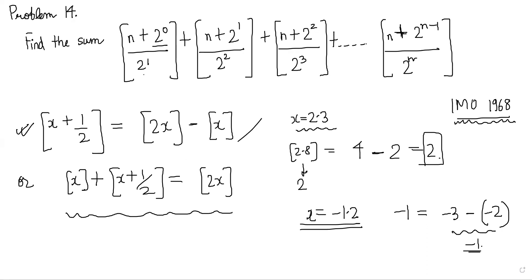So ultimately what we're getting is this sum: n plus 2 to the 0 by 2 to the 1, plus n plus 2 to the 1 by 2 squared, and so on till n plus 2 to the n minus 1 by 2 to the n.